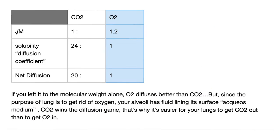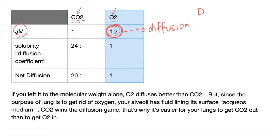CO₂ is larger than O₂ because it contains carbon. Based on molecular size alone, oxygen has the upper hand in diffusion since diffusion is proportional to 1/√M — CO₂ has higher M, therefore lower diffusion; oxygen has lesser M, therefore greater diffusion.